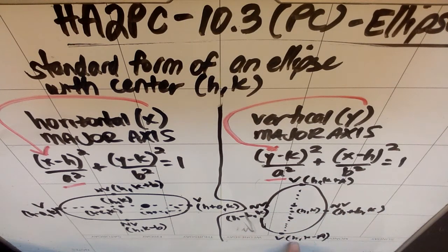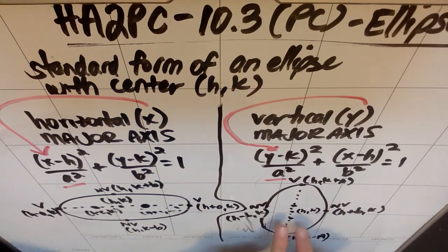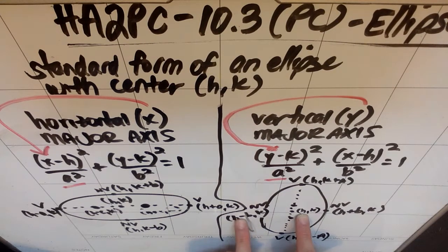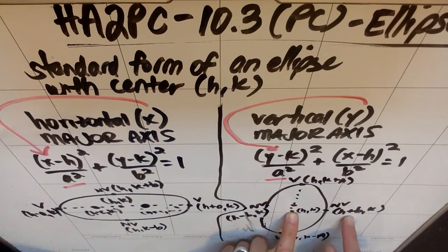This vertex is h comma k minus a because I went down a units. On my non-vertices, which are totally a Hoganism, I'd move b units to the left and right. So the h was the x coordinate, so this will be h minus b because I went left b but the y coordinate is still k, and this will be h plus b and the y coordinate is still k.